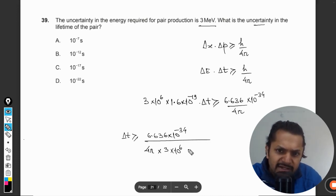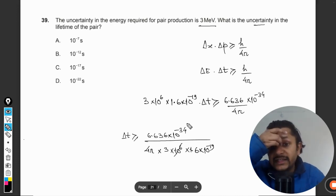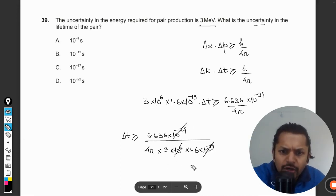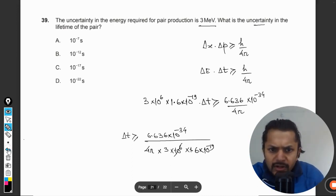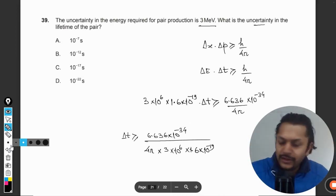So 6.636 × 10^-34 divided by 4π divided by 3 × 10^6 × 1.6 × 10^-19. Okay, let me use the calculator. I'm sorry for that, I'm getting confused there.